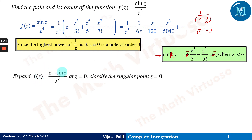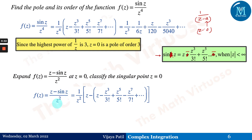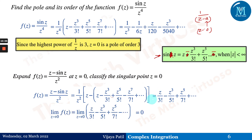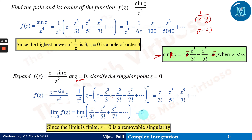Classify the singular point at z = 0 of f(z) = (z − sin z) / z². Expanding sin(z) and simplifying: (z − sin z)/z² = z/3! − z³/5! + ... All terms have positive powers of z in the numerator. Taking the limit as z → 0 gives 0, a finite number. Since the limit is finite, z = 0 is a removable singularity.